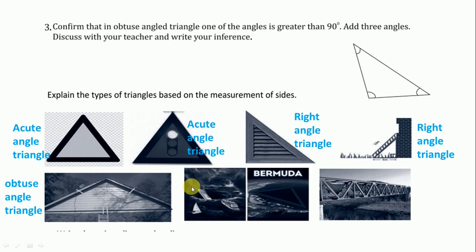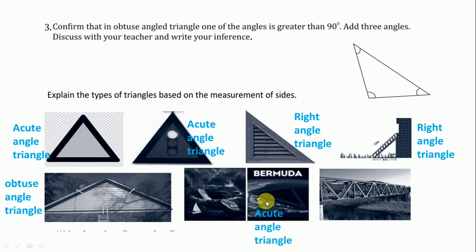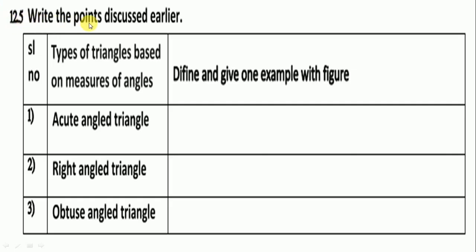In this figure the triangle is not clear so we move to the next one. Here is the Bermuda triangle. The Bermuda triangle is an acute angle triangle, and this one is 90 degrees so we write right angle triangle. 12.5 — the points discussed earlier.